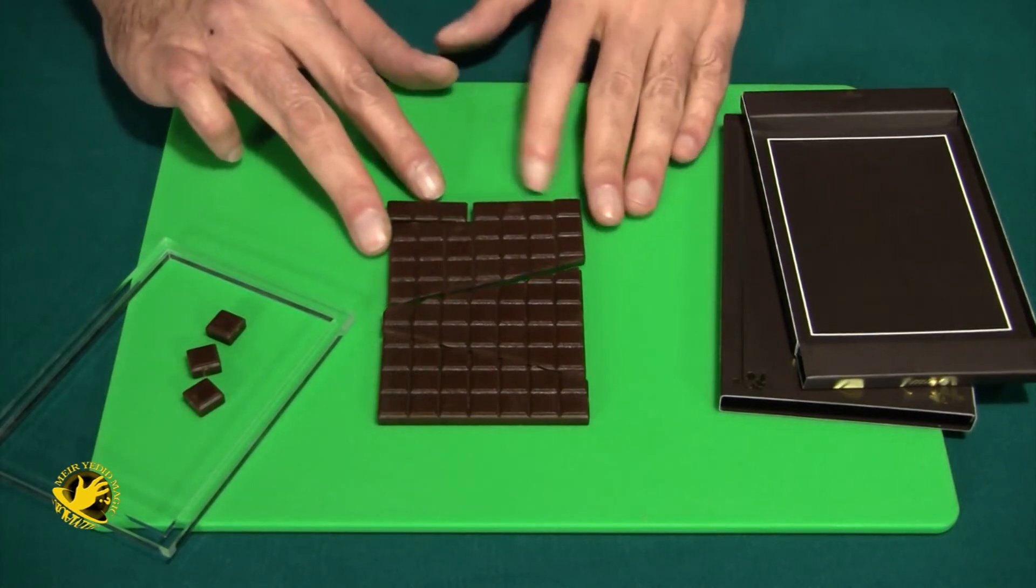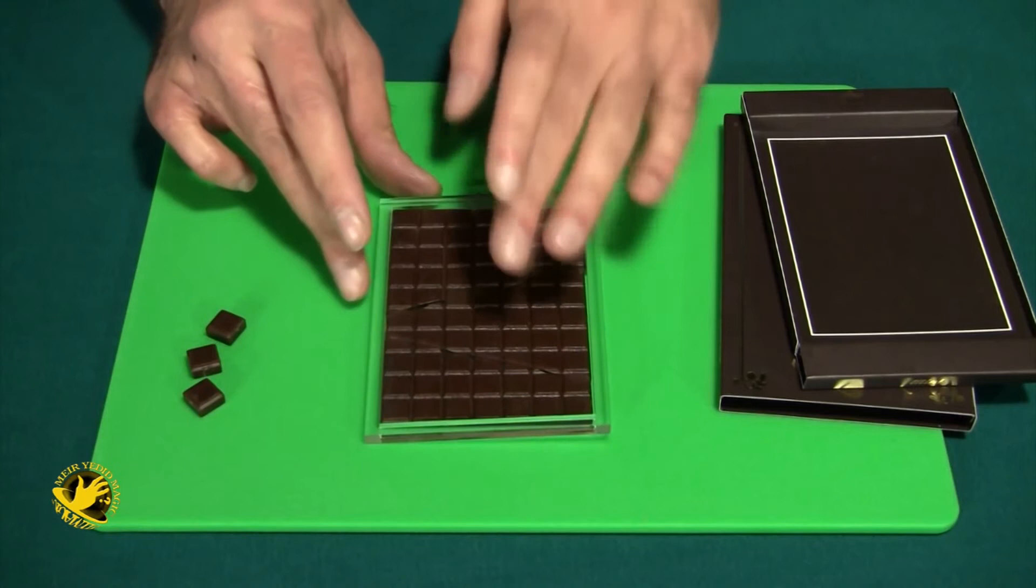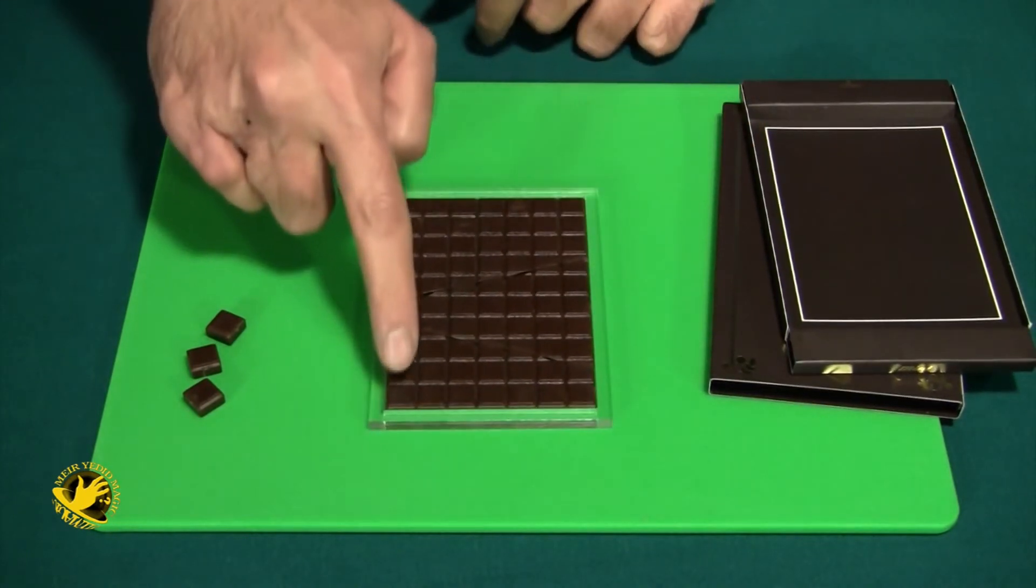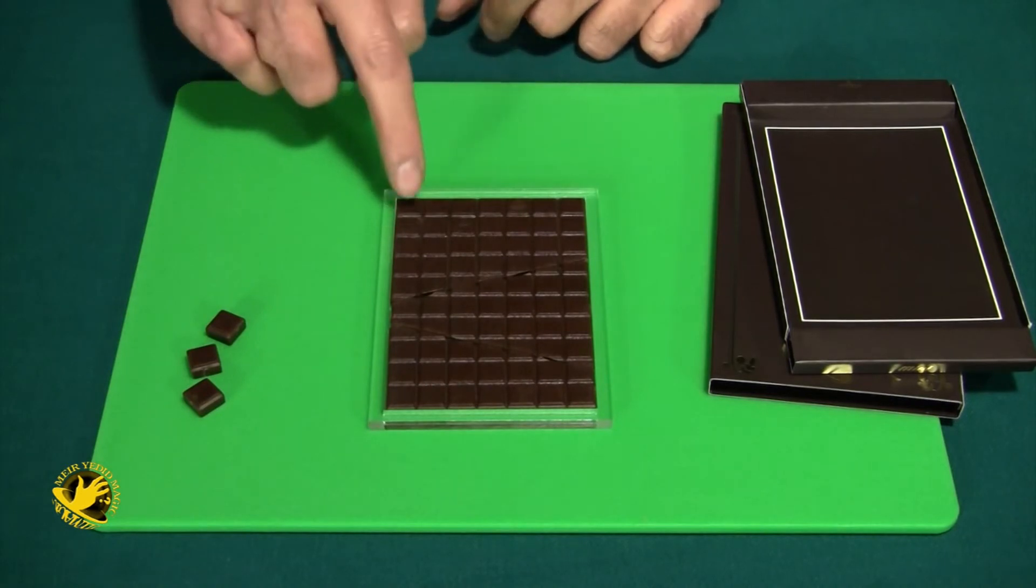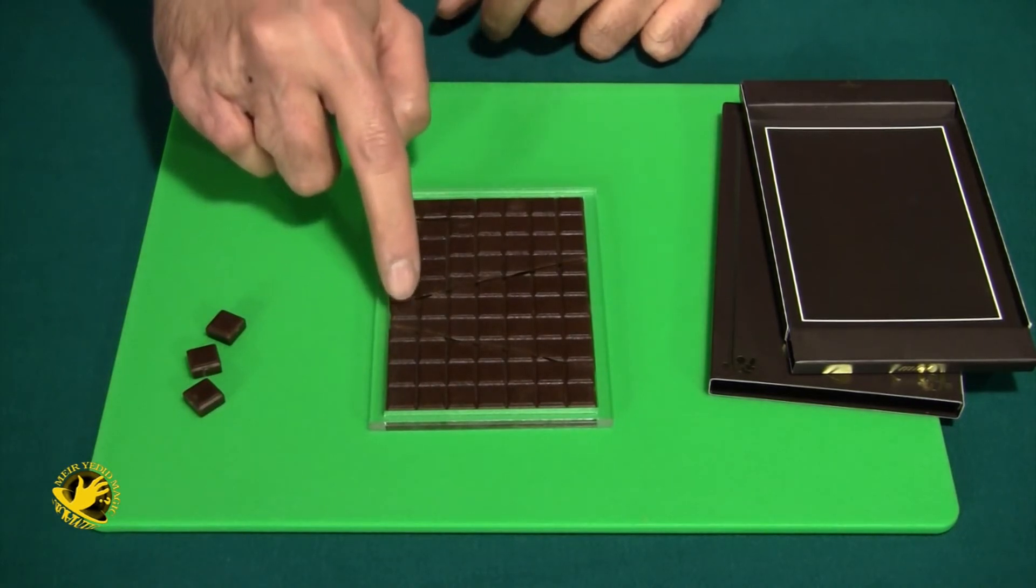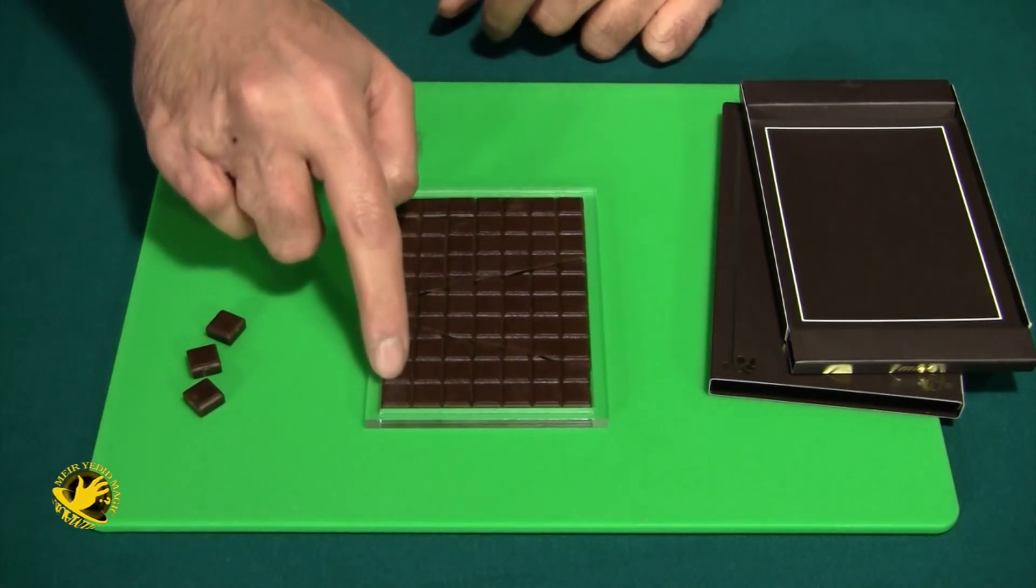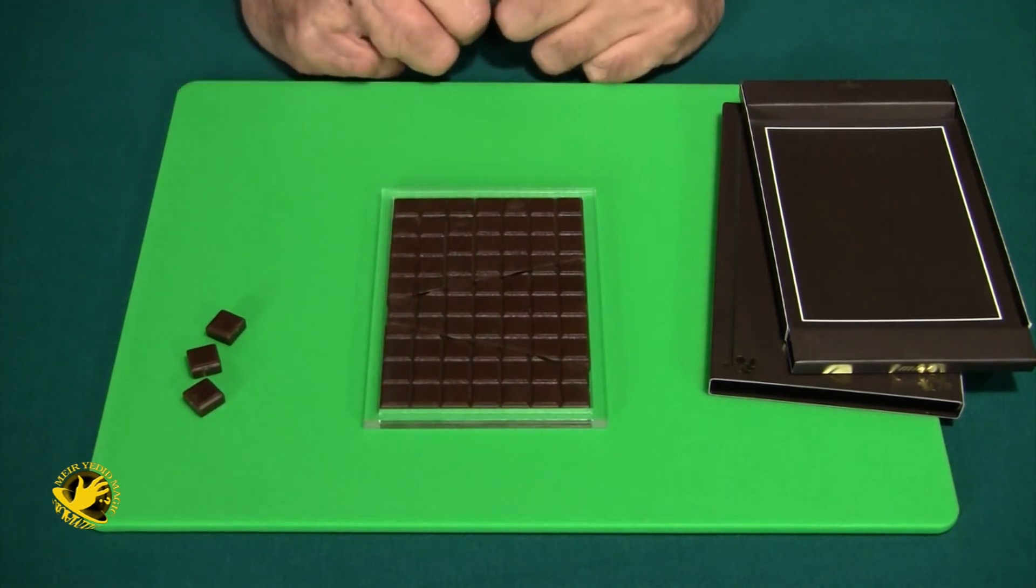Look, 70 pieces of chocolate fits perfectly into the frame and if we count it, we have 1, 2, 3, 4, 5, 6, 7 this way. And 1, 2, 3, 4, 5, 6, 7, 8, 9, 10 for a total of 70 pieces.